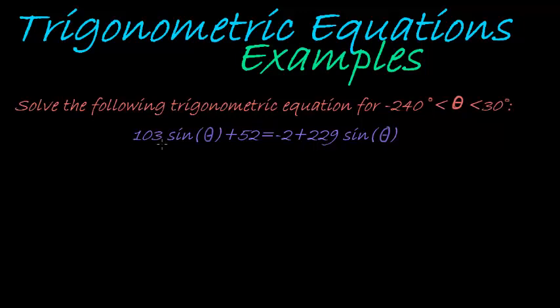So what we have is 103 sin(θ) on the left and 229 sin(θ) on the right. So if I take everything to one side, then I have 103 minus 229 sin(θ) on the left hand side.